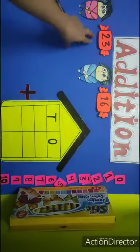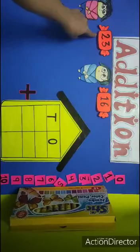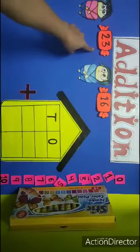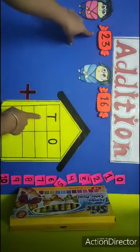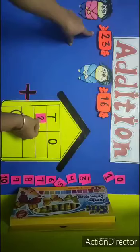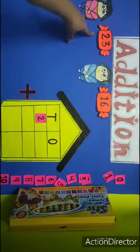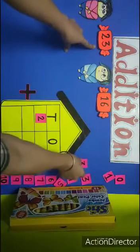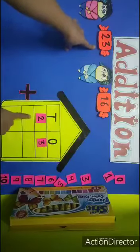Yes, the first number is 23. Means 2 tens and 3 ones. So, 2 will sit in tens room and 3 will go to ones room. 23.